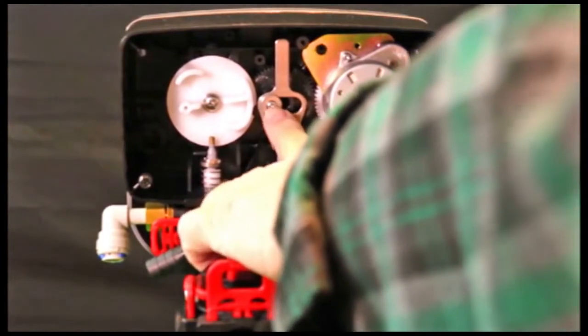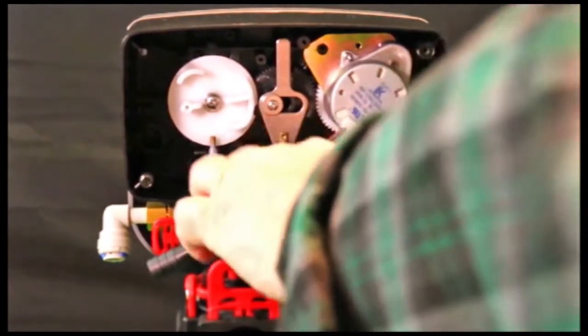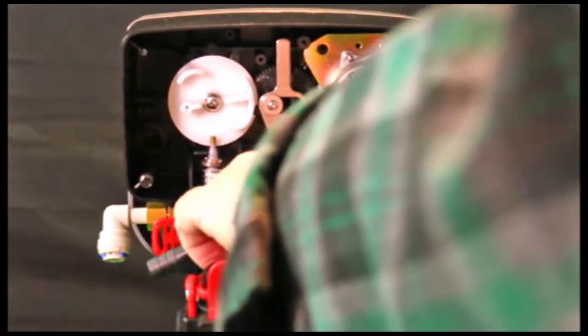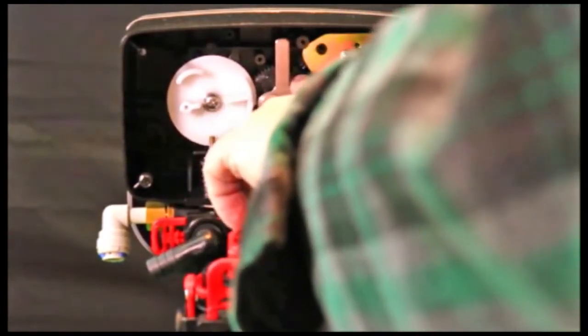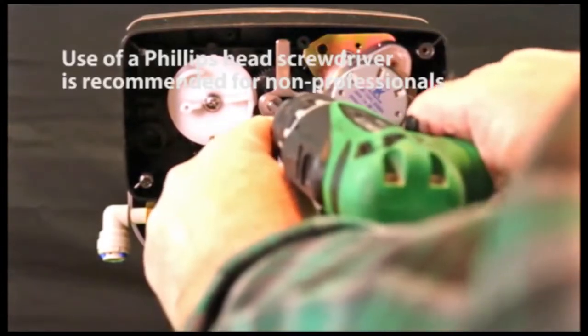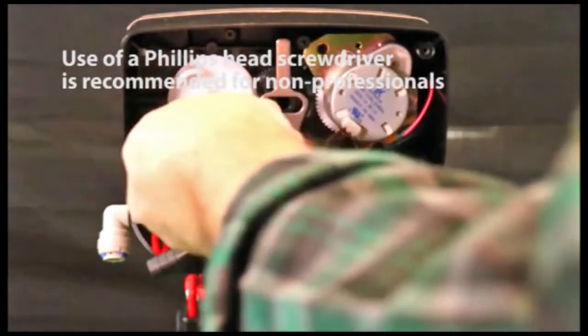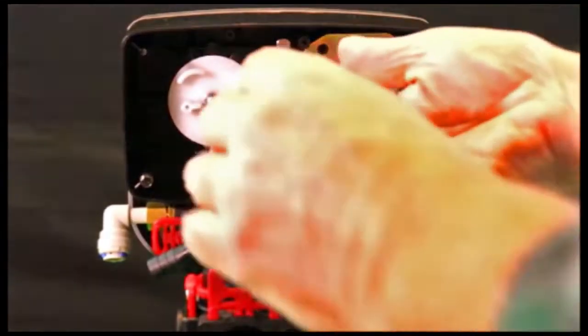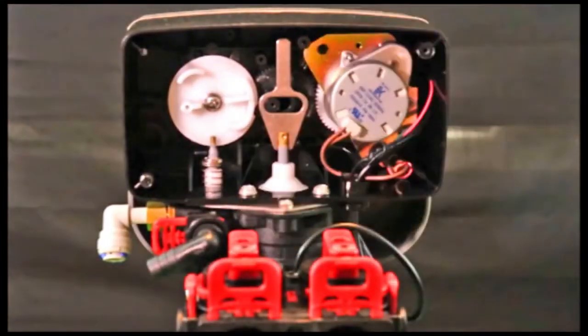Now, there's a self-tapping screw here on a washer that holds the piston stem bracket right here to a gear and a cam on the back. Zip that out. Grab it firmly. See there? Set that aside.